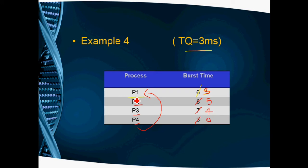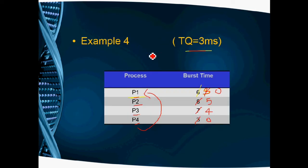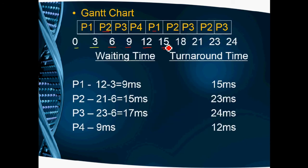P1 has a remaining burst time of 3 milliseconds and the time quantum is 3, so it is a full execute. P1 starts at 12 milliseconds, executes for 3 milliseconds, finishing at 15 milliseconds. P1's balance is now 0. Next in order is P2. P2 has a balance of 5 milliseconds but executes only 3 milliseconds, from 15 to 18 milliseconds, leaving a balance of 2 milliseconds.